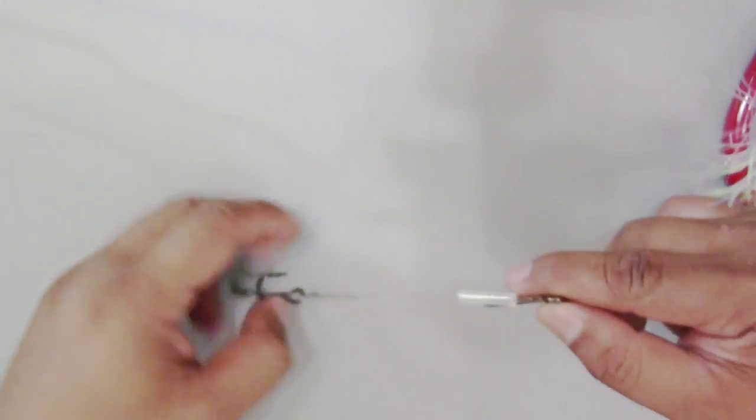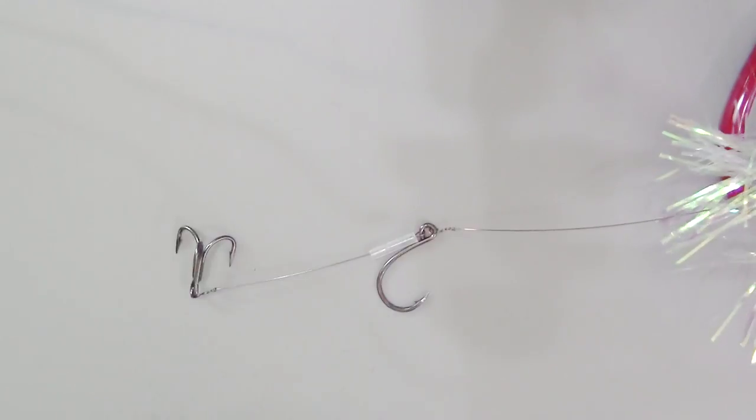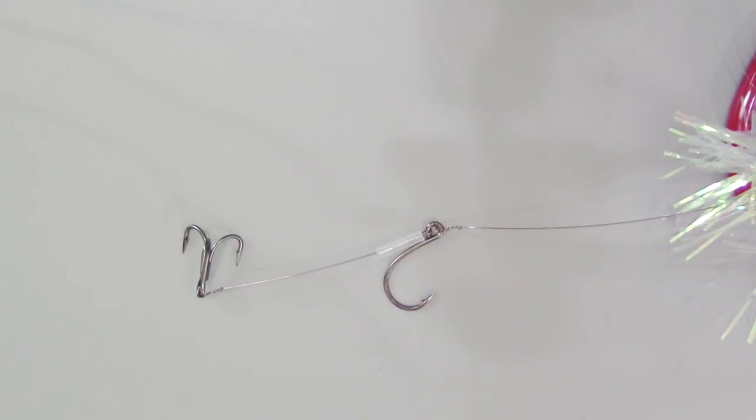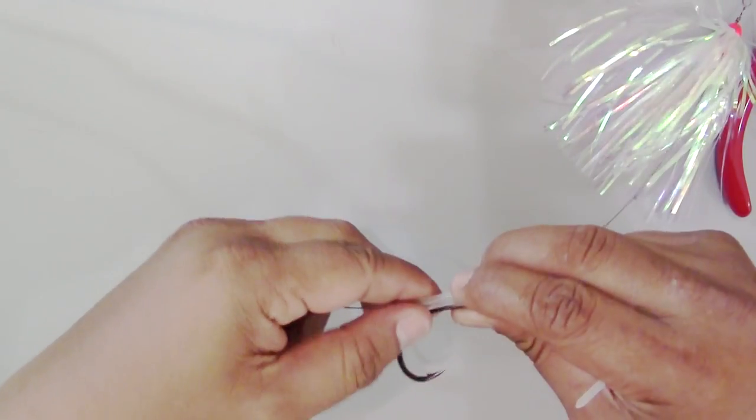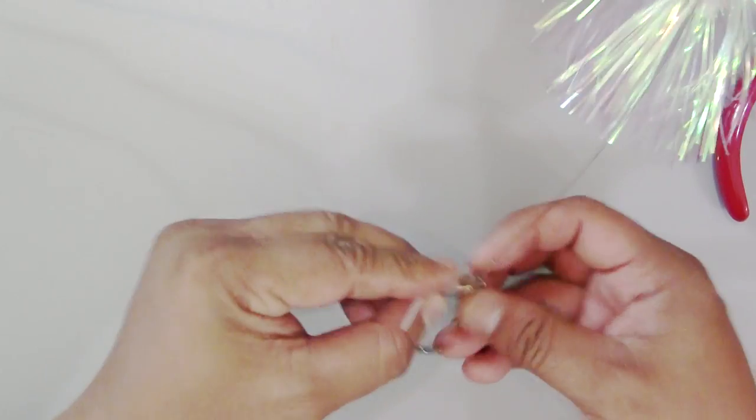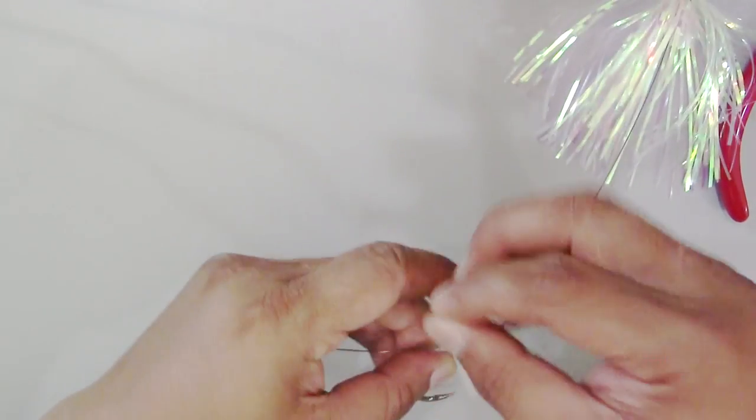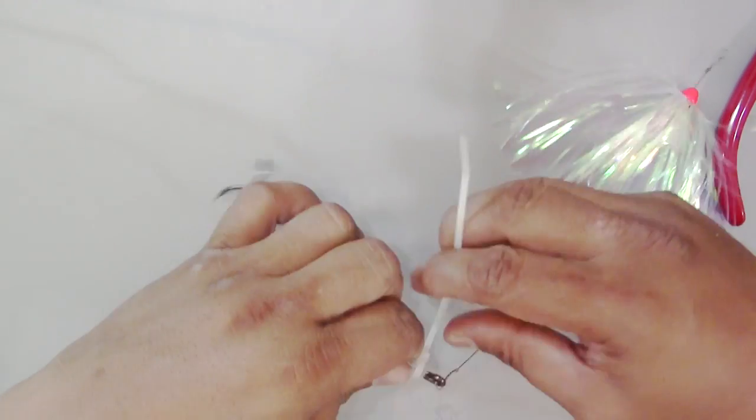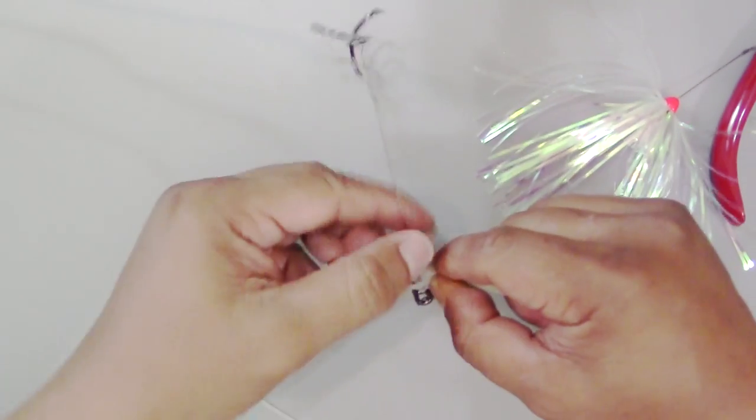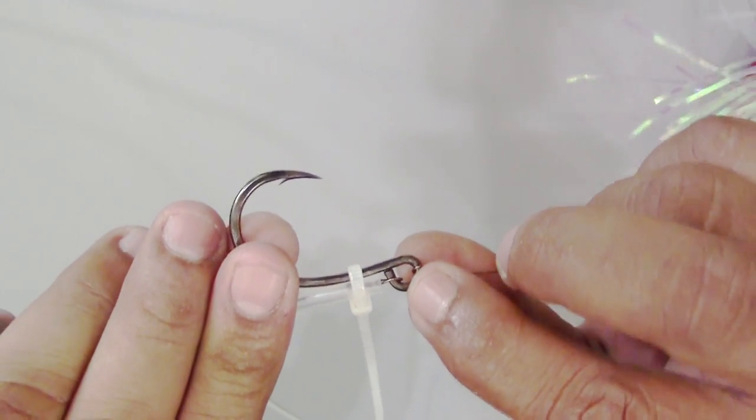Now it's time to secure this. I use smallest zip ties I can find. And this is size 2.5. Now I put that in as close to the eye as I could, then zip tie them. Like that. Now as you can see, the wire is pushed towards the middle right there, and that's exactly what you want.